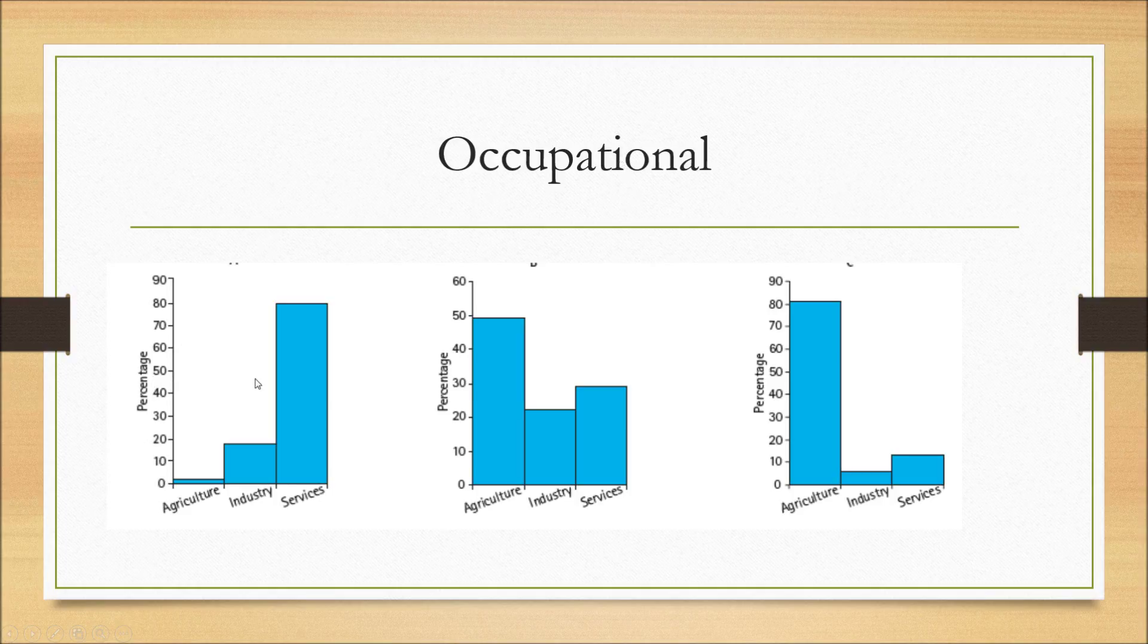And finally the last point is occupational distribution. As we can see clearly here, the one in the left hand side is a more developed country or developed economy. One on the left is less developed. As this is shown, this is the primary sector, secondary sector, tertiary sector and so on. We can clearly see and we can clearly interpret the different information such as there's 80 percent of workers working in the tertiary sector in a more developed economy, whereas there's 80 percent working as agriculture in a less developed economy.